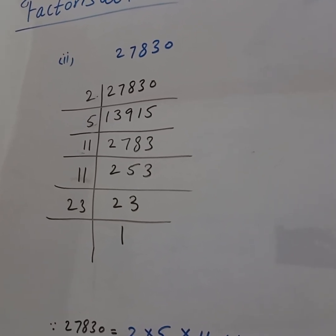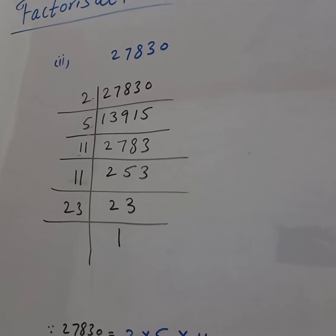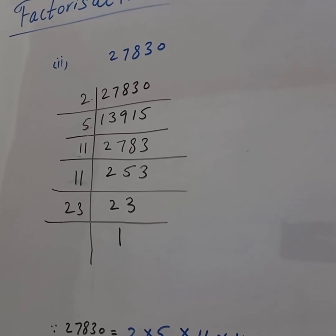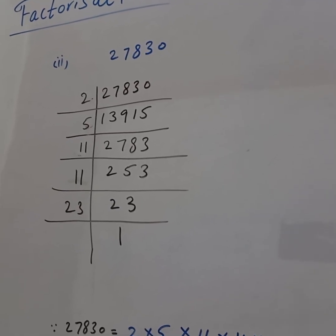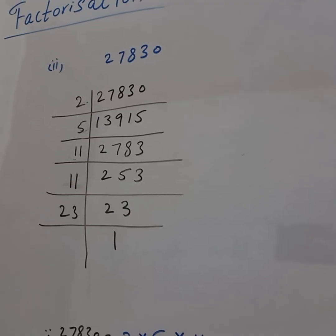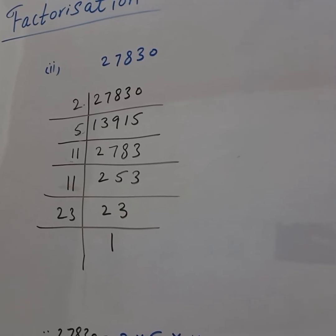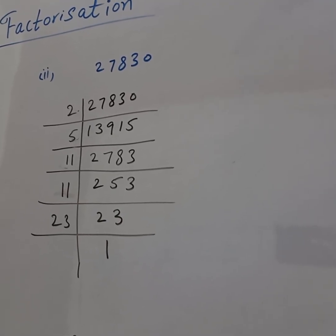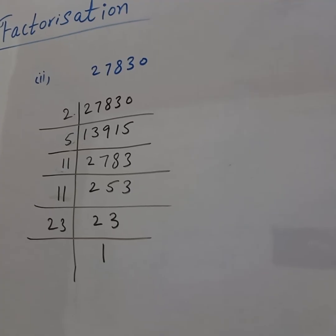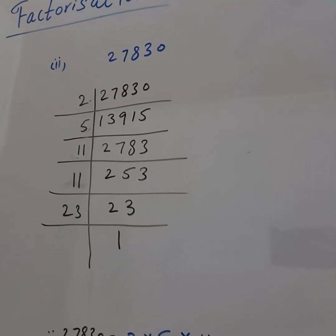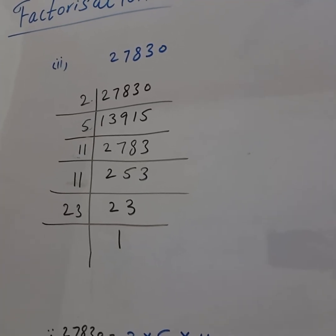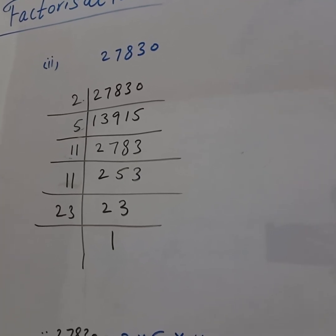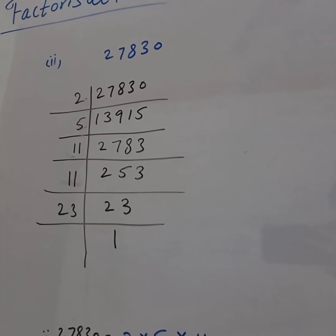Five fives are twenty-five, five sevens are thirty-five, five seventy-five, four left. So next, eleven twos are twenty-two, five left.